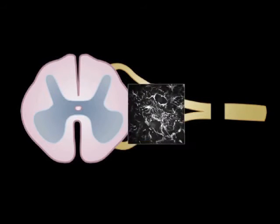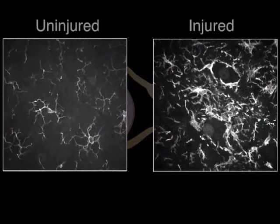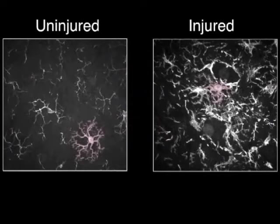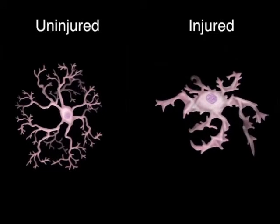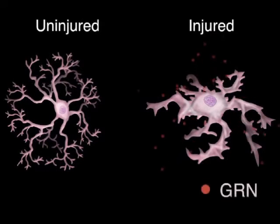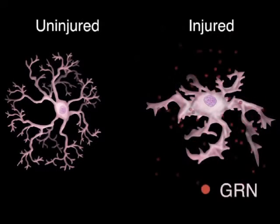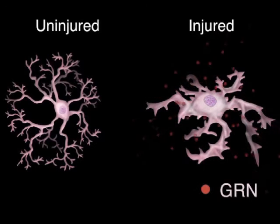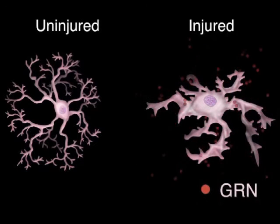When faced with neuronal stresses like injury or disease, there's a dramatic change in the type of supporting glial cells called microglia. They migrate to the stressed area and alter their morphology. We saw a dramatic increase in progranulin in the injured site compared to the uninjured site, specifically in these activated microglia.